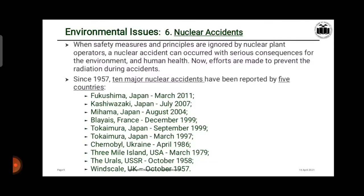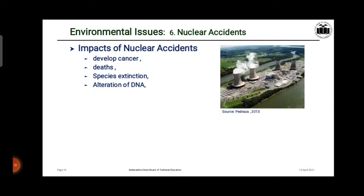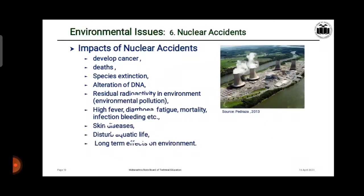Since 1957, ten major nuclear accidents have been reported by five different countries: Japan, France, Ukraine, USA, UK, and Russia. The impacts of nuclear accidents included in our syllabus are: it develops cancer, deaths, specimen or species extinction, and alteration of DNA. These are the major impacts observed from nuclear accidents.